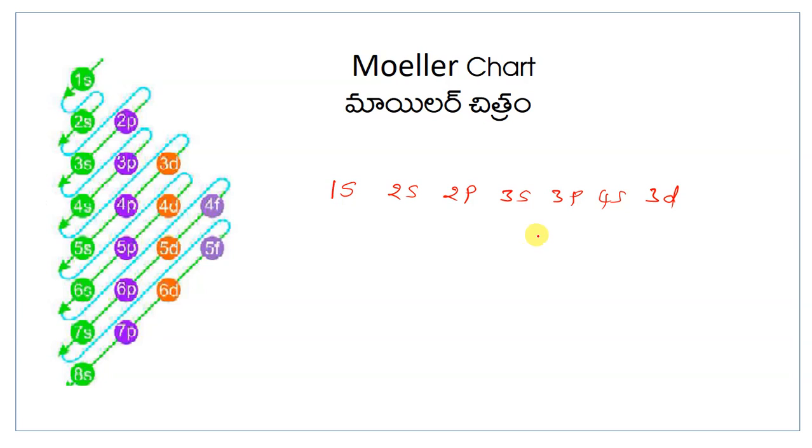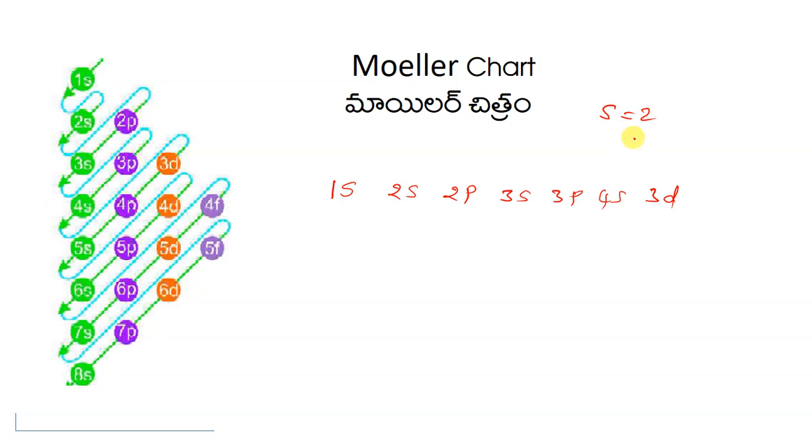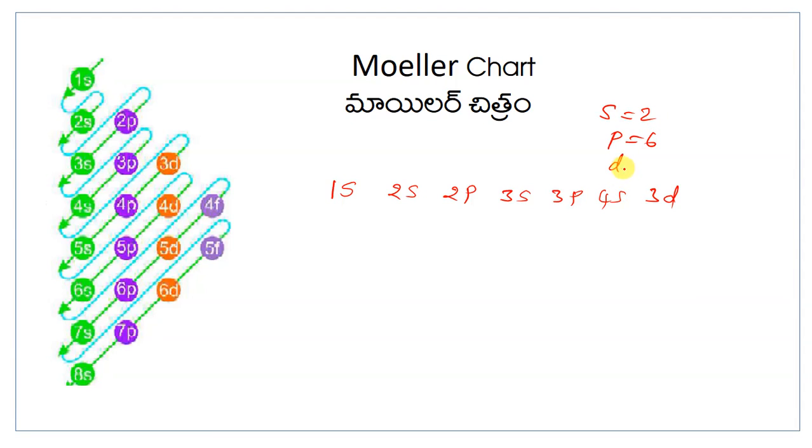Using this, we can easily write the electronic configuration of 30 elements. Now s is an orbital, p is an orbital, and d is also another orbital. Every orbital contains some electrons.